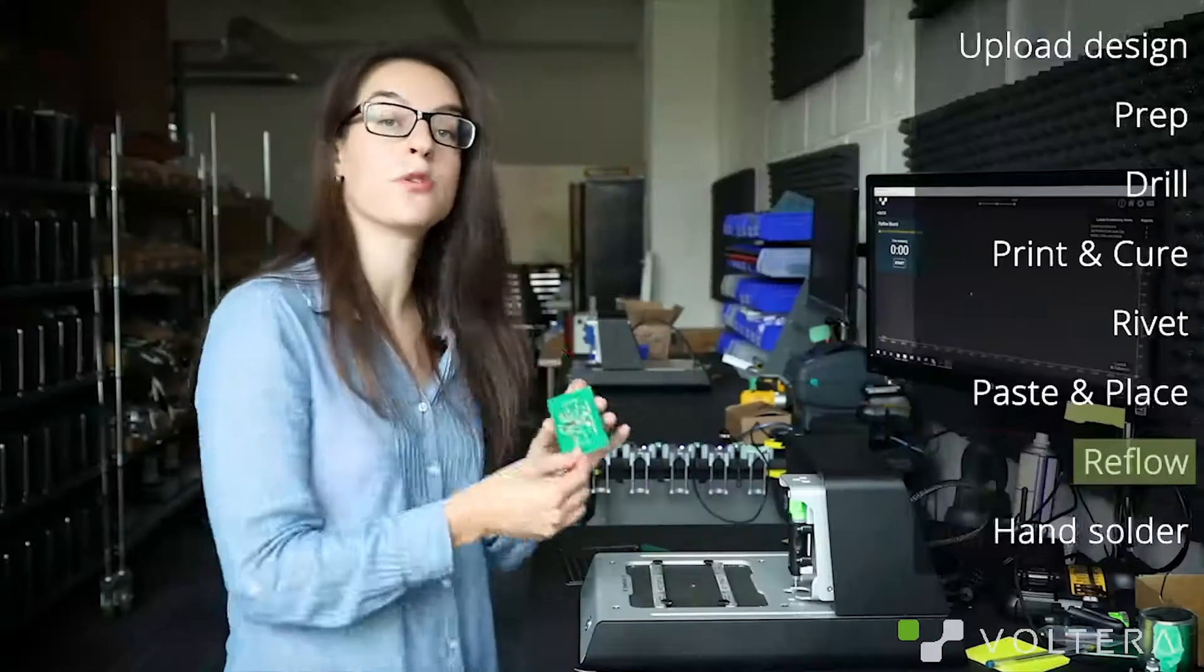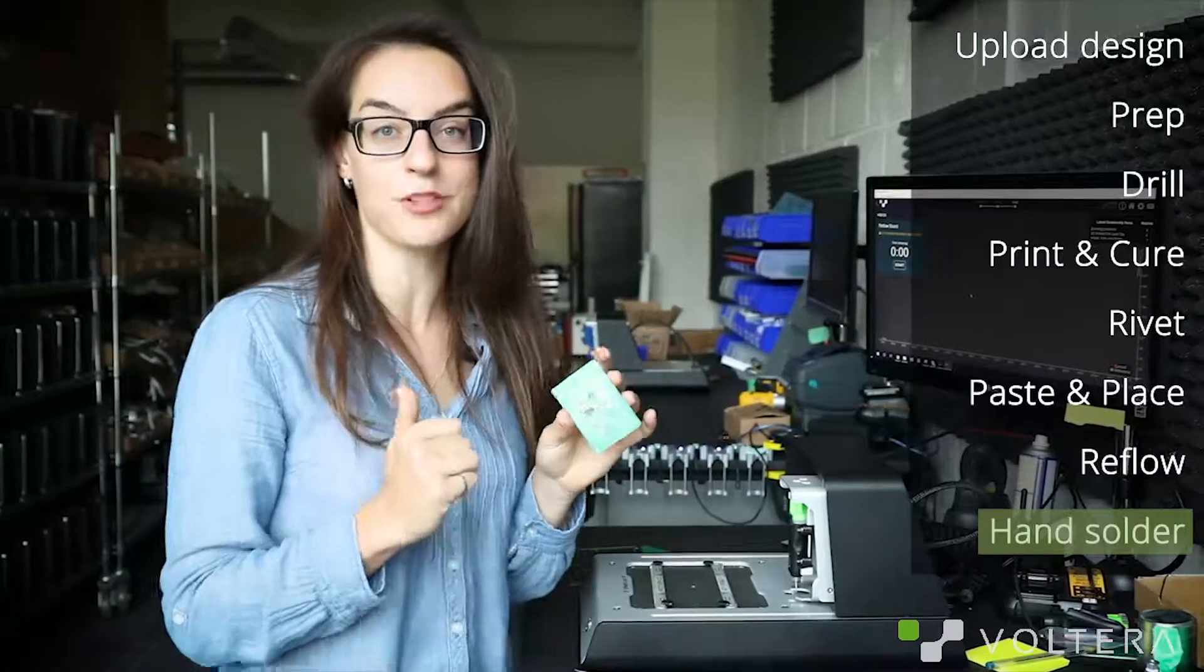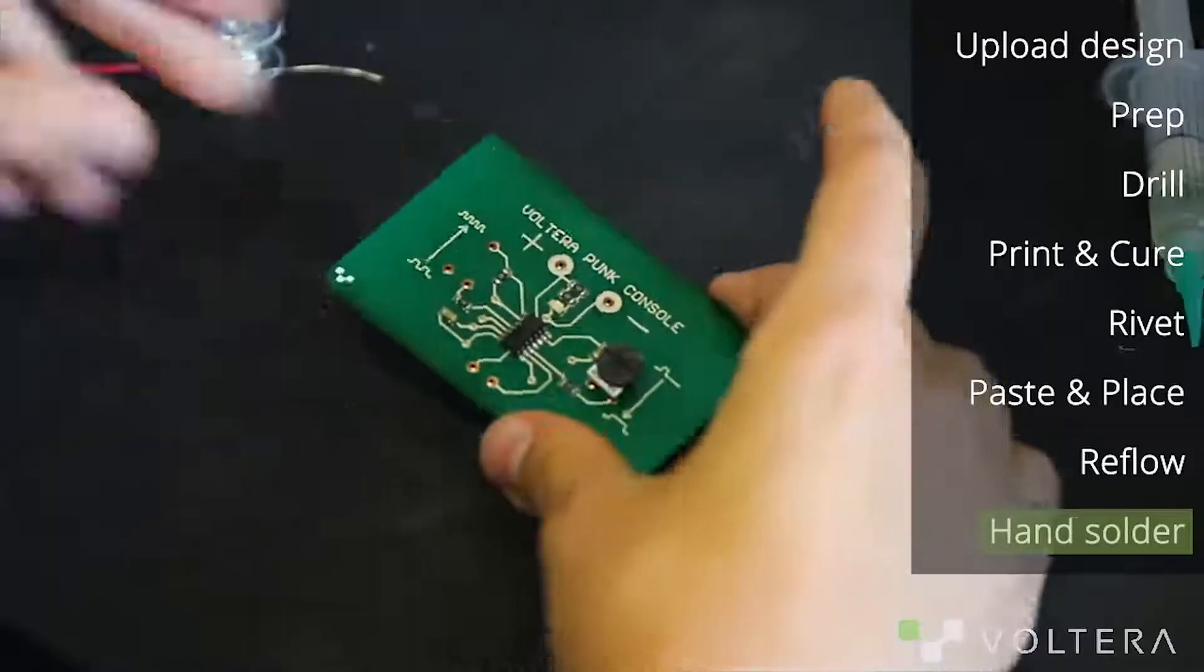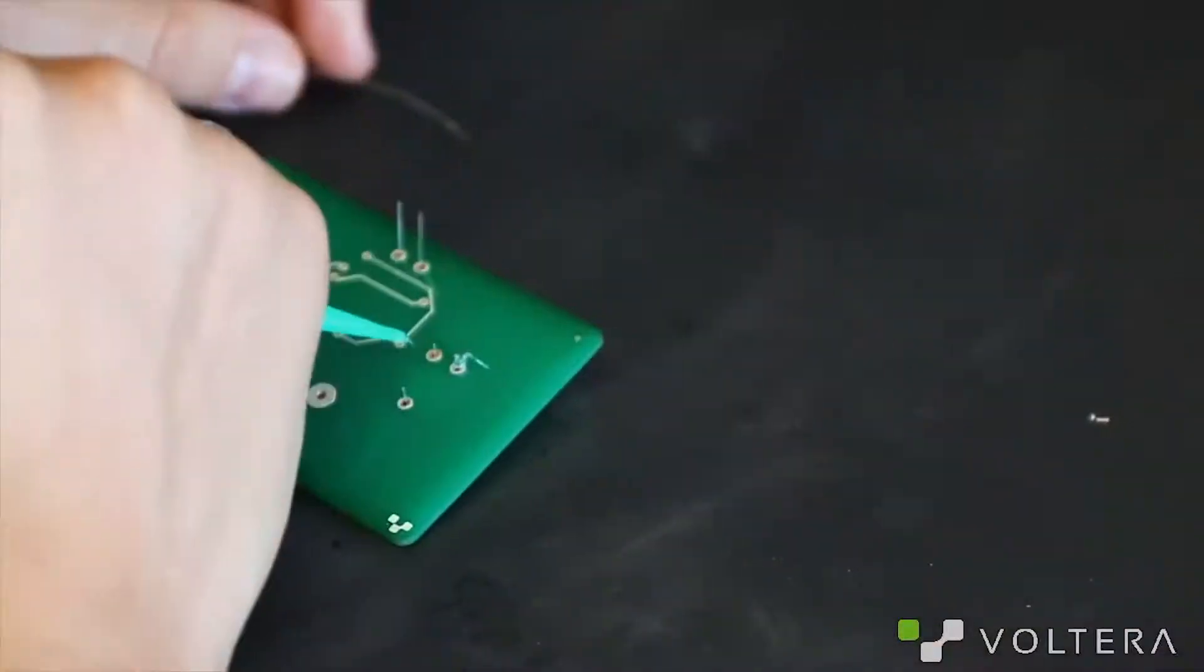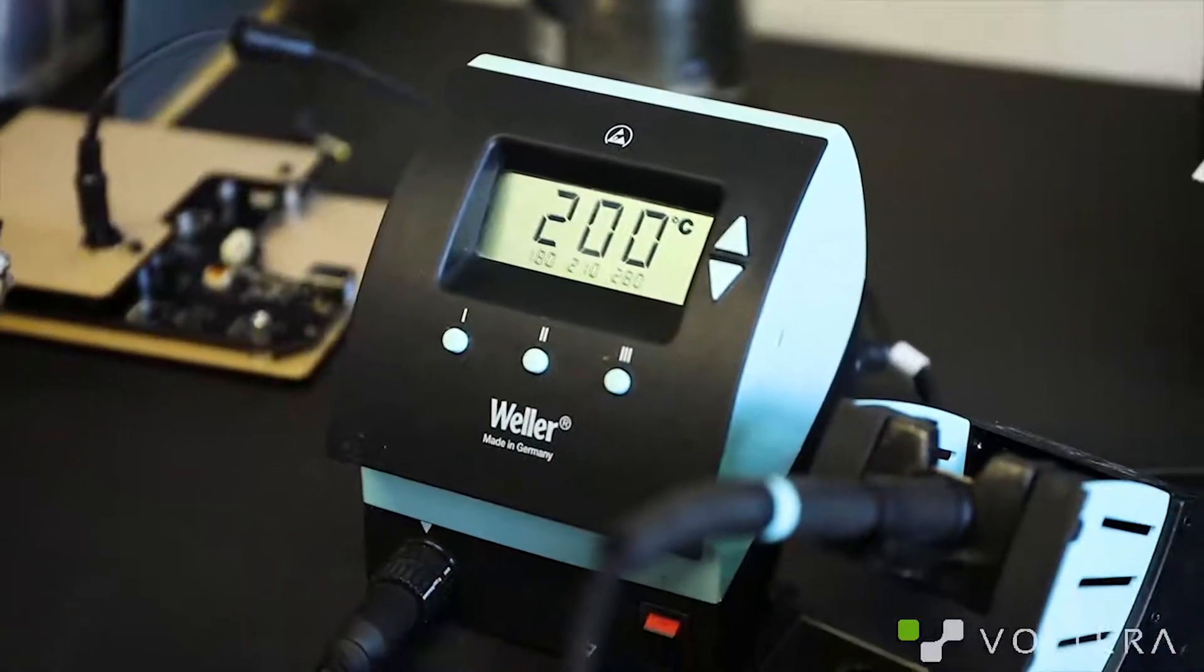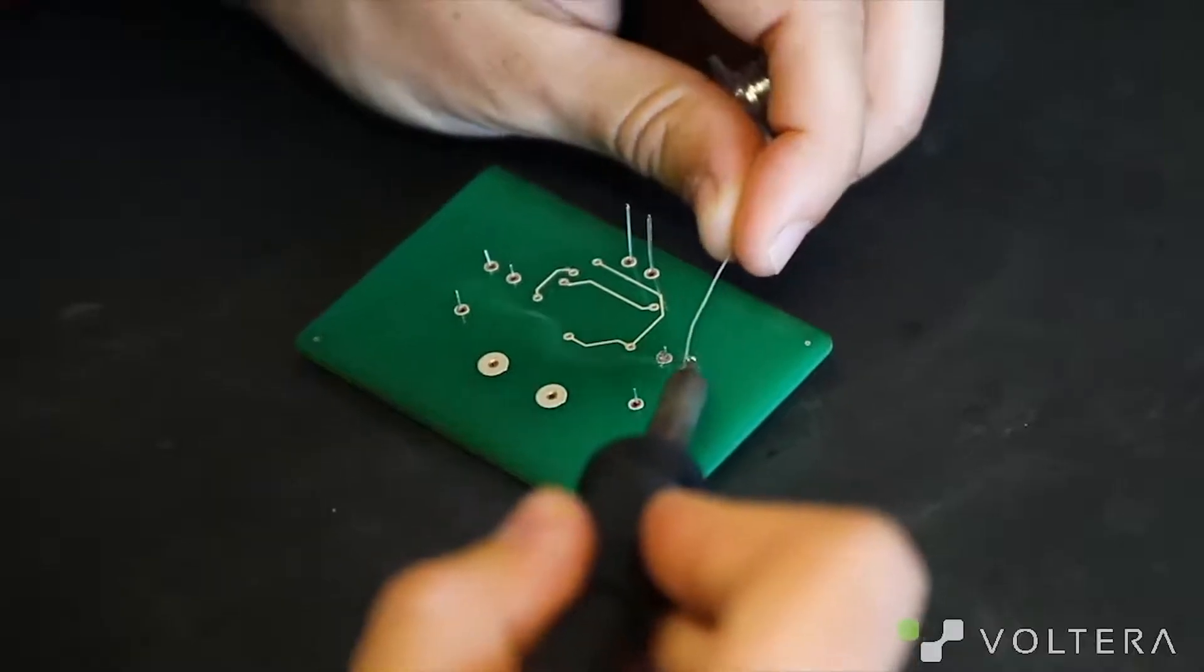This board does have a few through-hole components, so I'm going to solder them using the provided solder wire. I'm using plenty of flux and my iron is set to 200 degrees Celsius because the traces are heat sensitive.